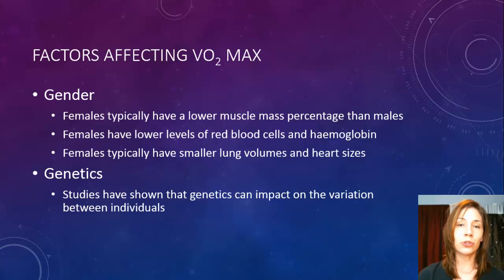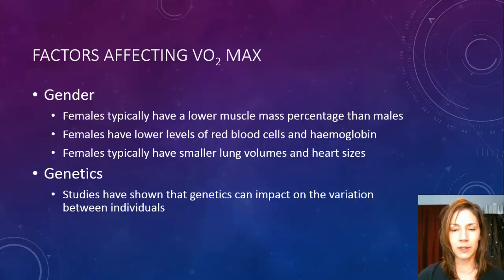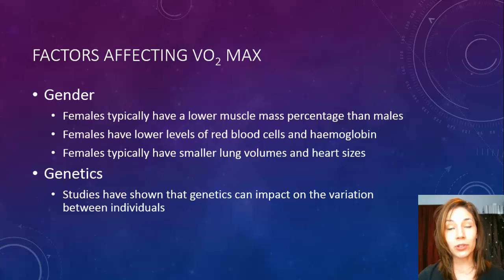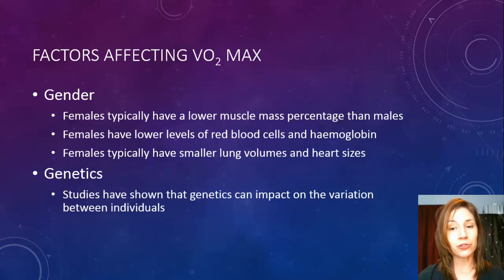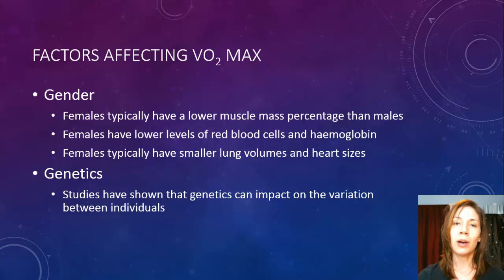Females typically also have smaller lung volumes and heart sizes. Studies show that females are generally smaller than males, and that comes down to biology. If you have a smaller lung volume you're less likely to absorb oxygen into your bloodstream, and if the heart is smaller you can pump less around — again affecting the VO2max and making it lower.